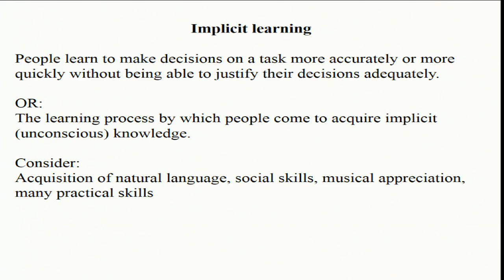The definition we'll be working with is the second one, because it's a bit more controversial: implicit learning is the process by which you acquire unconscious knowledge. That's the controversial part — whether knowledge can be unconscious. What we'll need to do to establish that is to come up with methodology, ways of determining whether knowledge is conscious or unconscious, and that's largely what we'll be doing in this lecture.